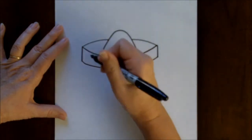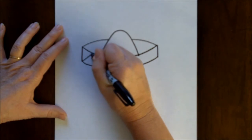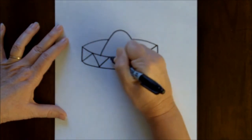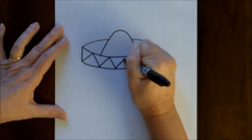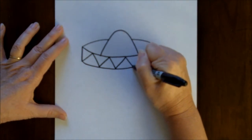Now we're going to add a little bit of detail. So I like to make just straight lines, zigzagging across the base of the hat.